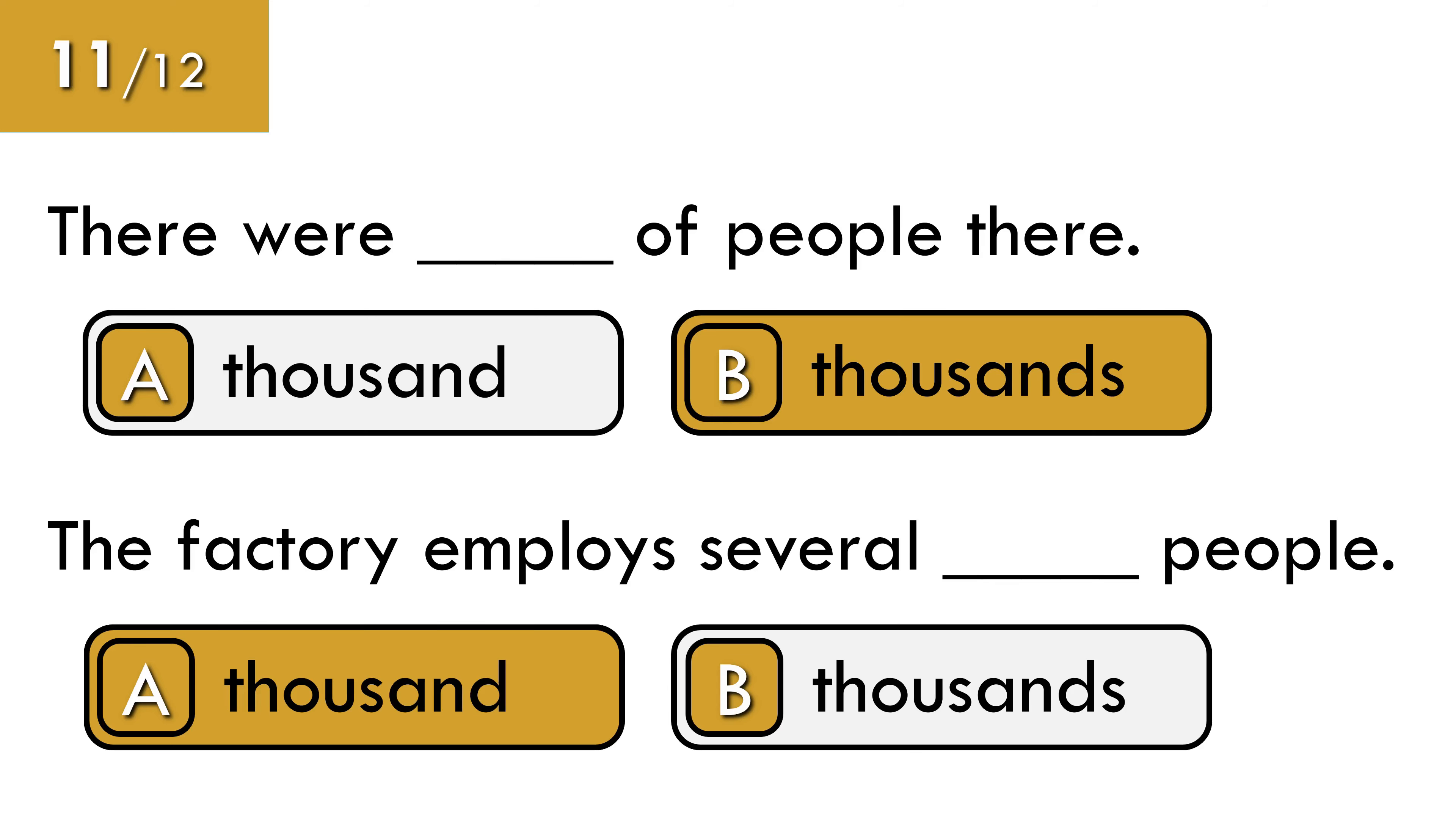After a number or after several or a few, we say thousand without the final S. For example, three thousand people or several thousand people. If there is no exact number or quantity before thousand, we use plural S plus of. For example, thousands of people.